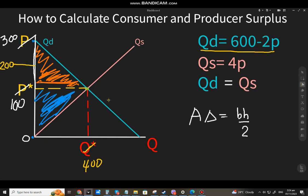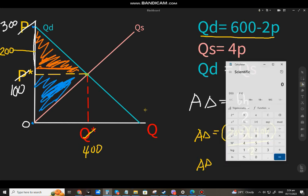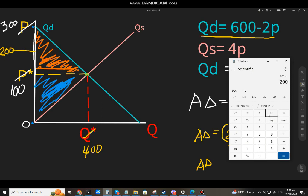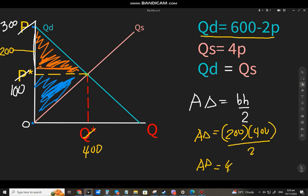Ito, area ng triangle. I equals sa 200. Times mo ng 400. At divide mo ng 2. Gamit ka ng calc na lang. 200 times 400. 80,000 divided mo ng 2. 40,000. Yes. So, 40,000. Kung pesos yung nandito, siyempre, pesos din to. 40,000 pesos yung area dito. Sa consumer surplus.